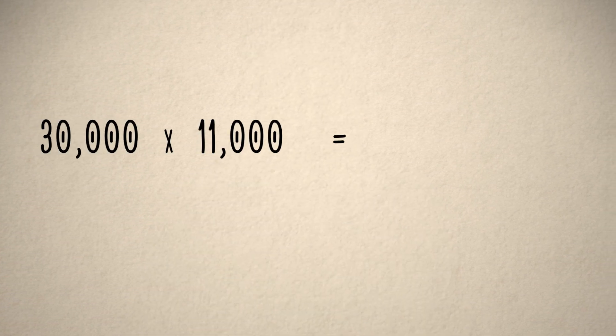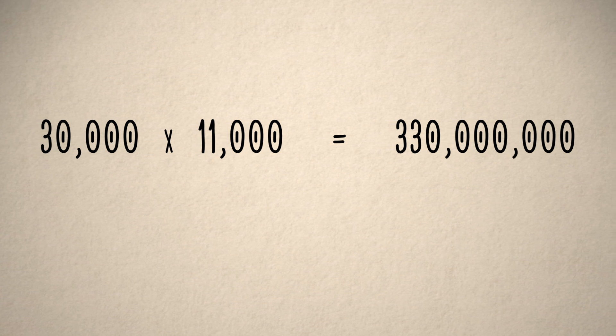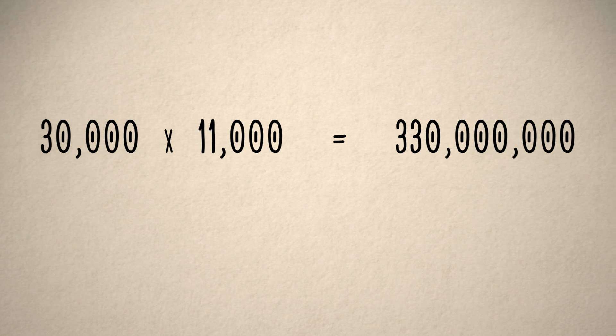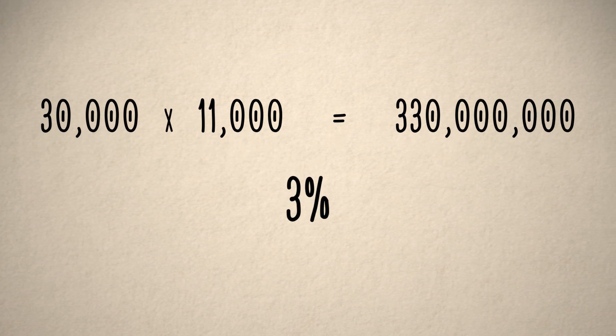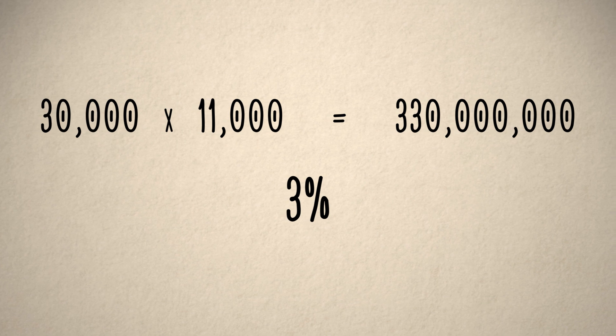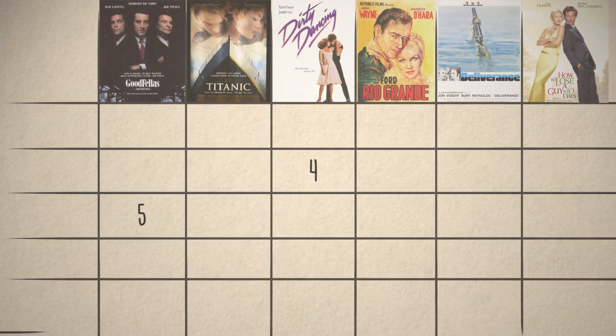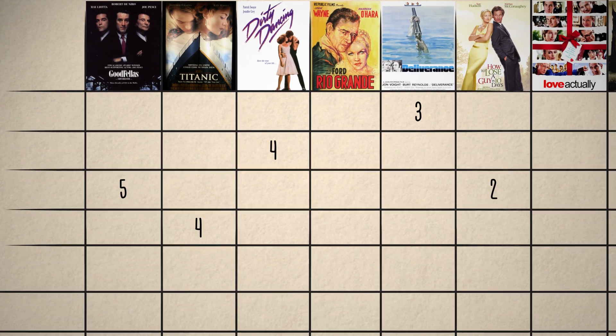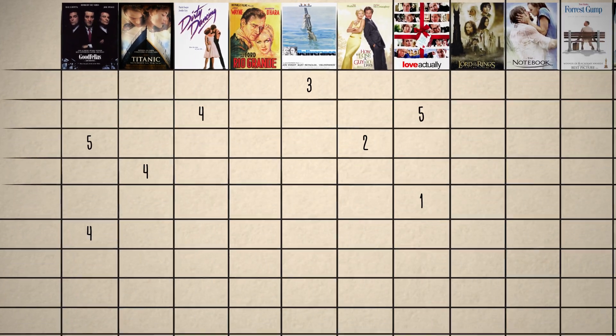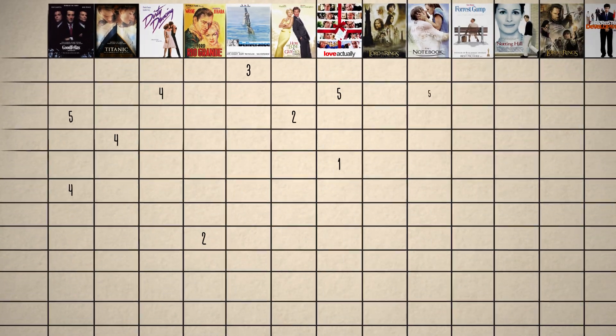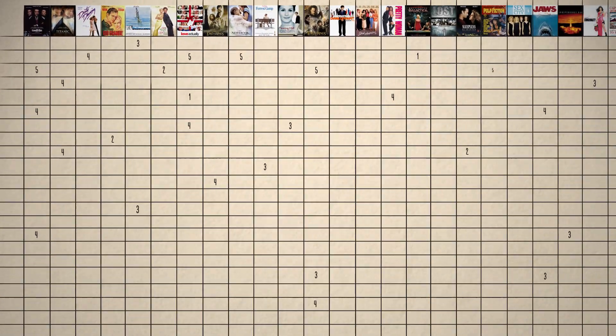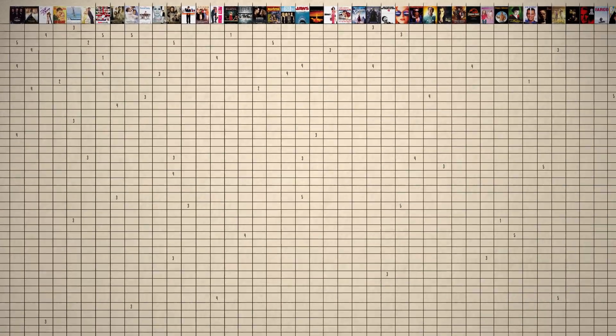In principle, each user can assign a rating between 1 to 5 to each movie. Therefore, the total number of ratings can be a little more than 330 million. In the dataset collected, we have less than 3% of these 330 million or so entries filled — that is, it is an extremely sparse matrix. The goal of a recommendation algorithm would be to fill in these 97% or so missing entries.